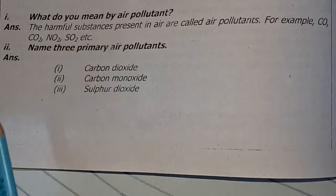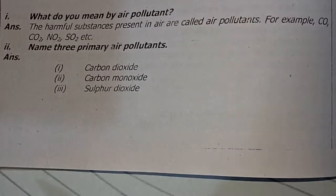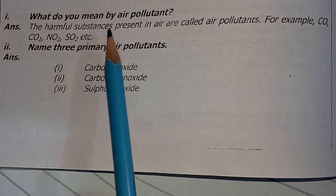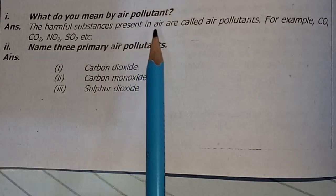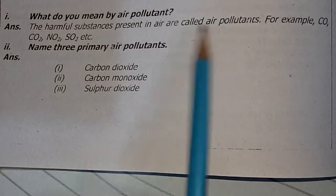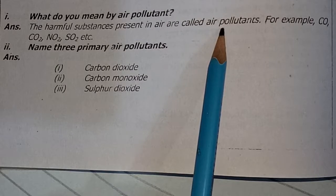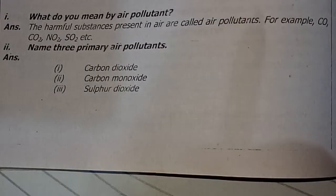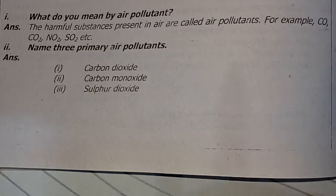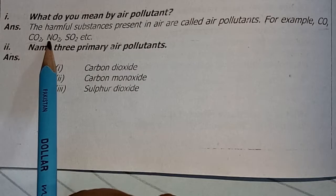Harmful substances in the air are called air pollutants. For example, carbon monoxide is a very dangerous air pollutant. Others include carbon dioxide, nitrogen oxide, and sulfur dioxide. So these are air pollutants.